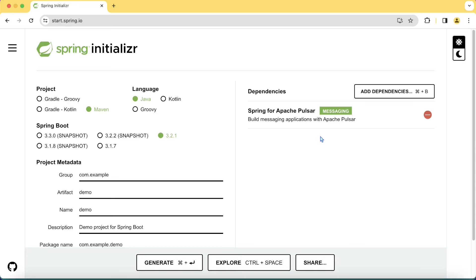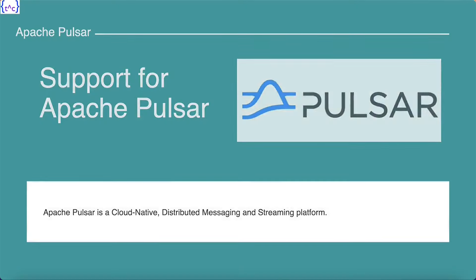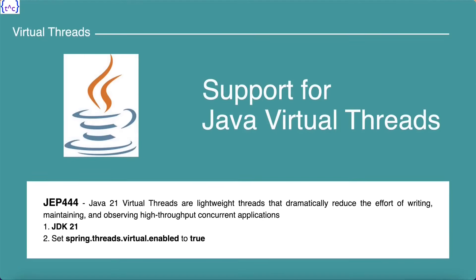The next important feature is support for Java Virtual Threads. In JDK 21, full-fledged support for virtual threads is available. Virtual threads are lightweight threads that will dramatically reduce the effort for writing, maintaining, and observing high-throughput concurrent applications. If your focus is to build high-performing concurrent applications, you can consider using Java Virtual Threads. In Spring Boot 3.2, Java Virtual Thread support is available — all you need to do is choose JDK 21 and set the property spring.threads.virtual.enabled to true.